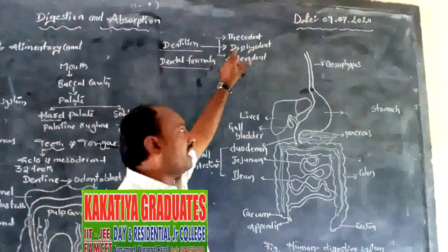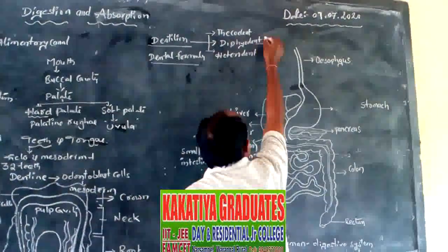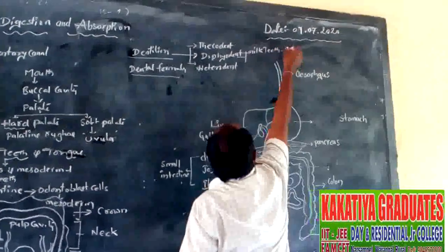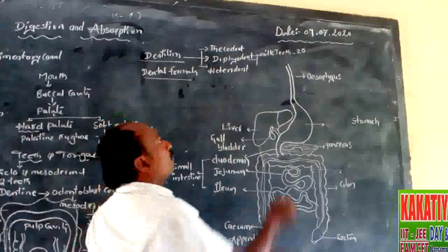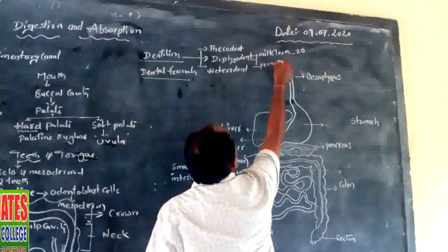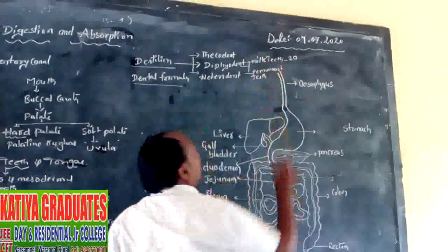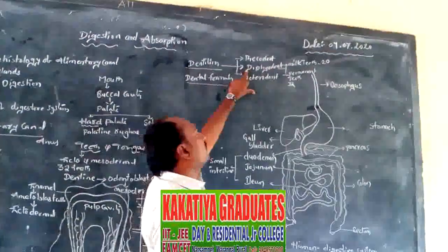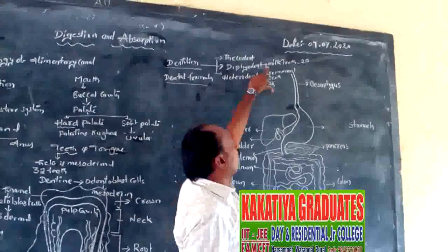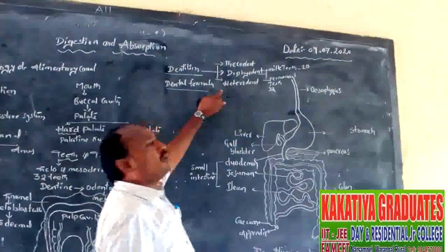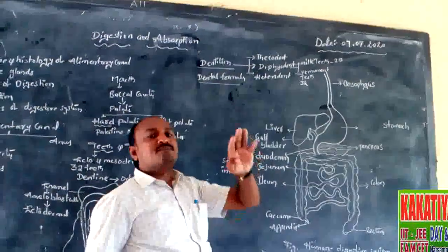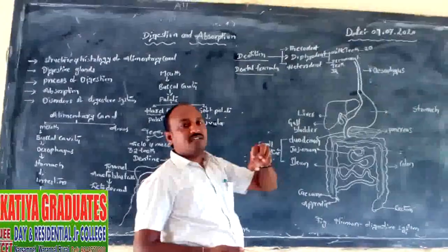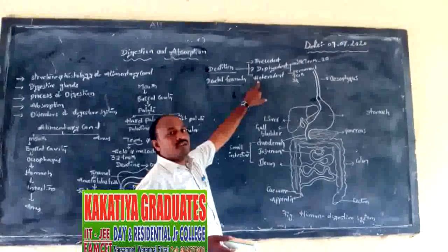The first set of teeth is called milk teeth or deciduous teeth, numbering 20. Milk teeth are replaced by permanent teeth, which number 32 in adults. The two sets appearing in a lifetime define the diphyodont type. In heterodont type, four types of teeth of variable shapes and functions are observed in the oral cavity.